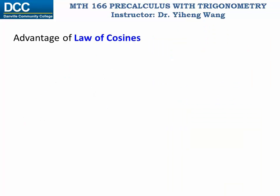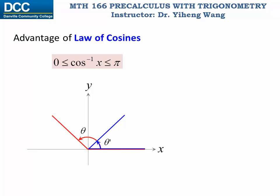One advantage of applying the Law of Cosines is that the inverse cosine function has a range between zero and pi, which means your calculator can directly return an obtuse angle. Furthermore, an acute angle and an obtuse angle have different cosine values — the acute angle has a positive cosine value and the obtuse angle has a negative cosine value. Therefore there is no ambiguity when applying Law of Cosines, unlike when applying Law of Sines.